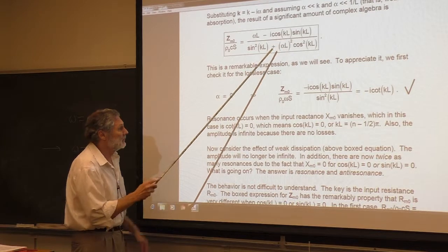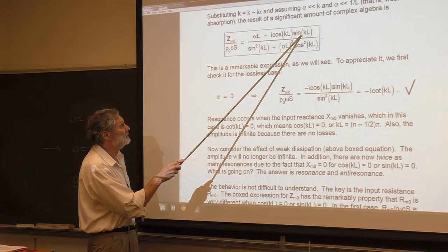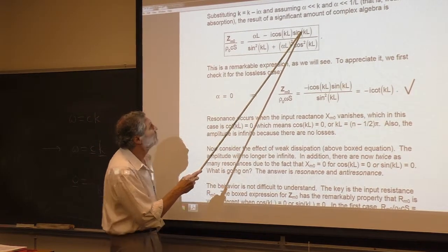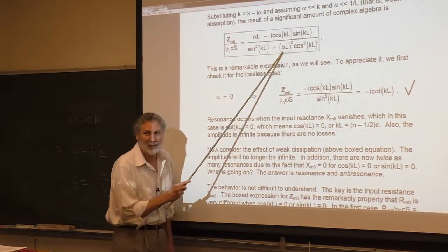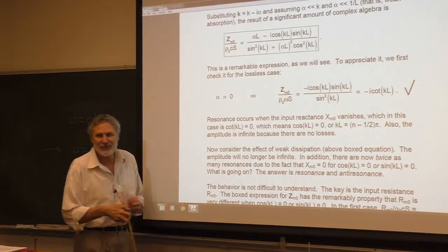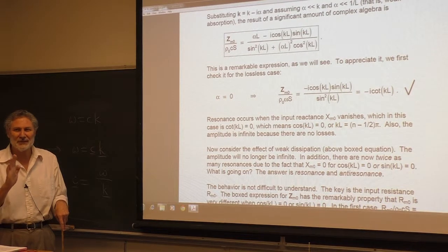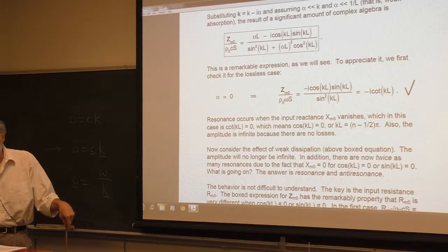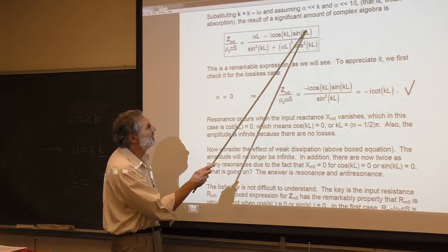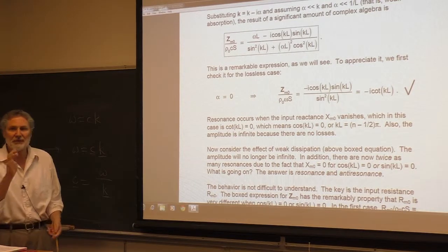Now let's switch to the other resonances, where sine of KL equals zero. Now this term is gone, this is one, and now the alpha is downstairs. So what kind of input resistance do you feel? Huge. It's big. What kind of response is that going to lead to? Small. These are the anti-resonances — when the sine vanishes, you have anti-resonances, small response, and you feel a big input resistance.